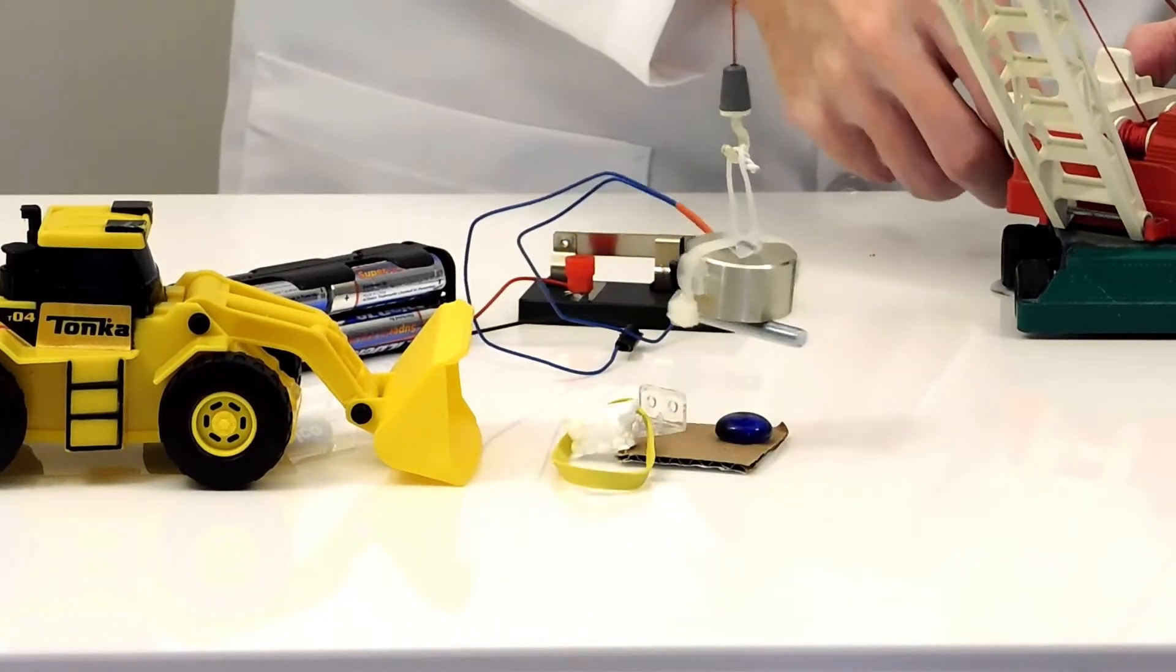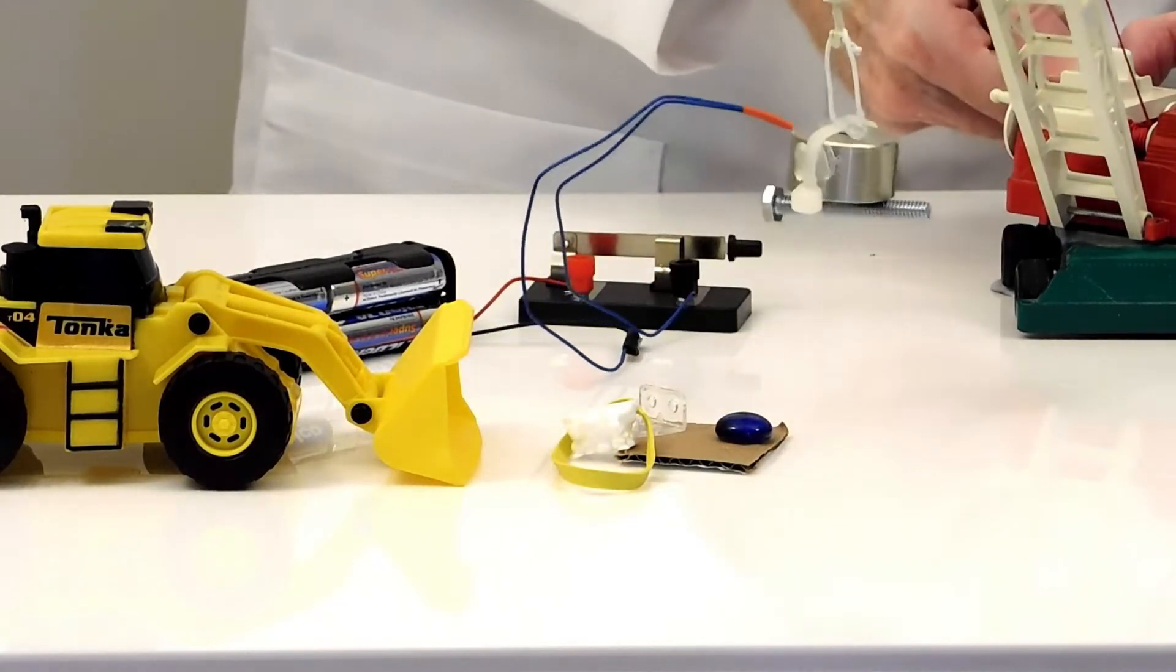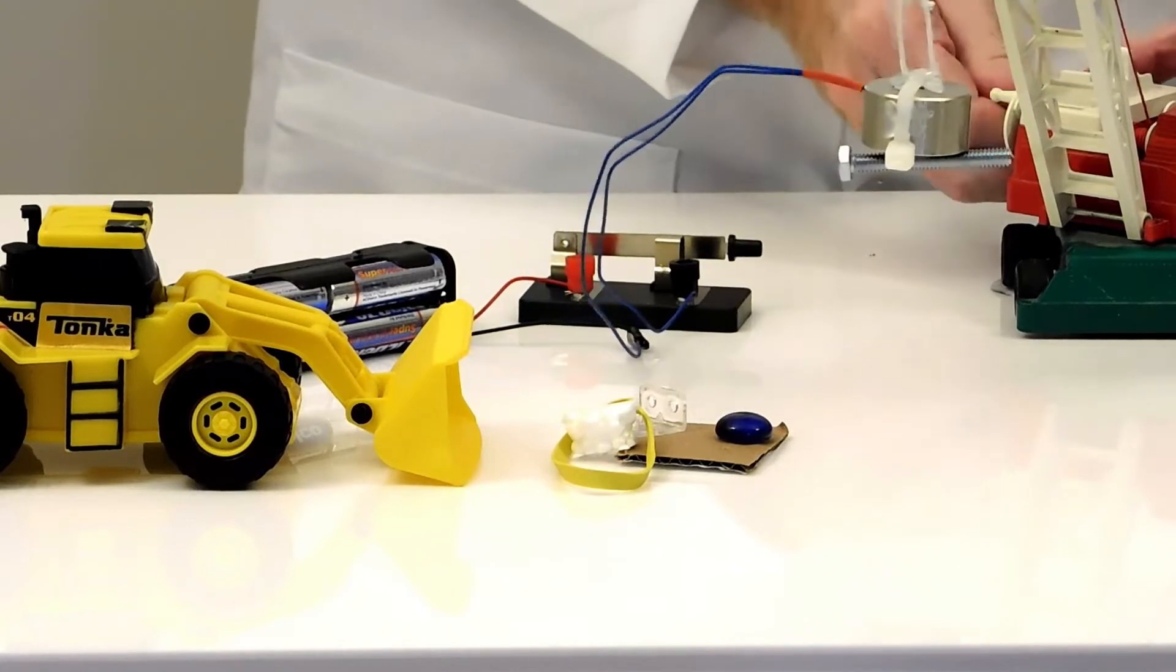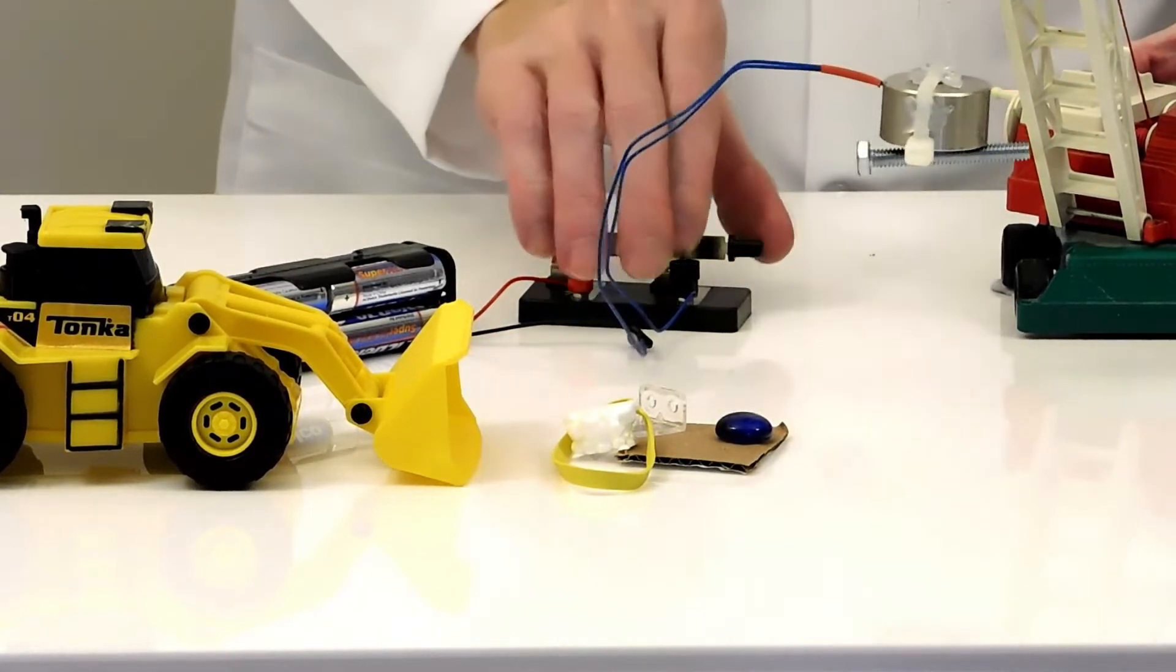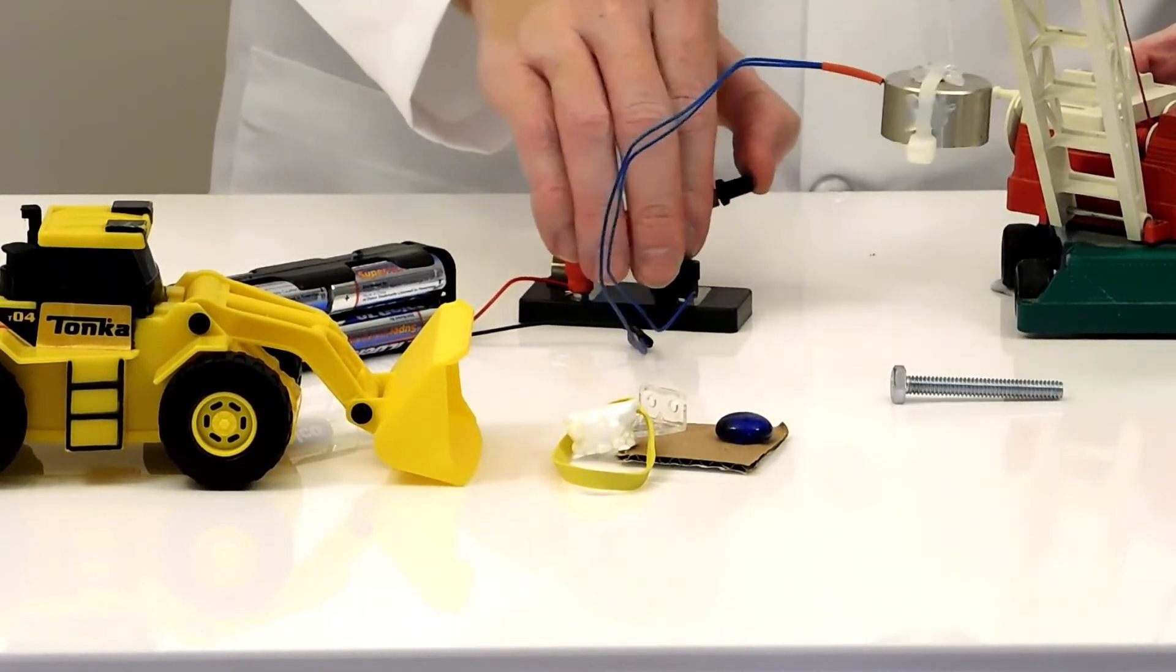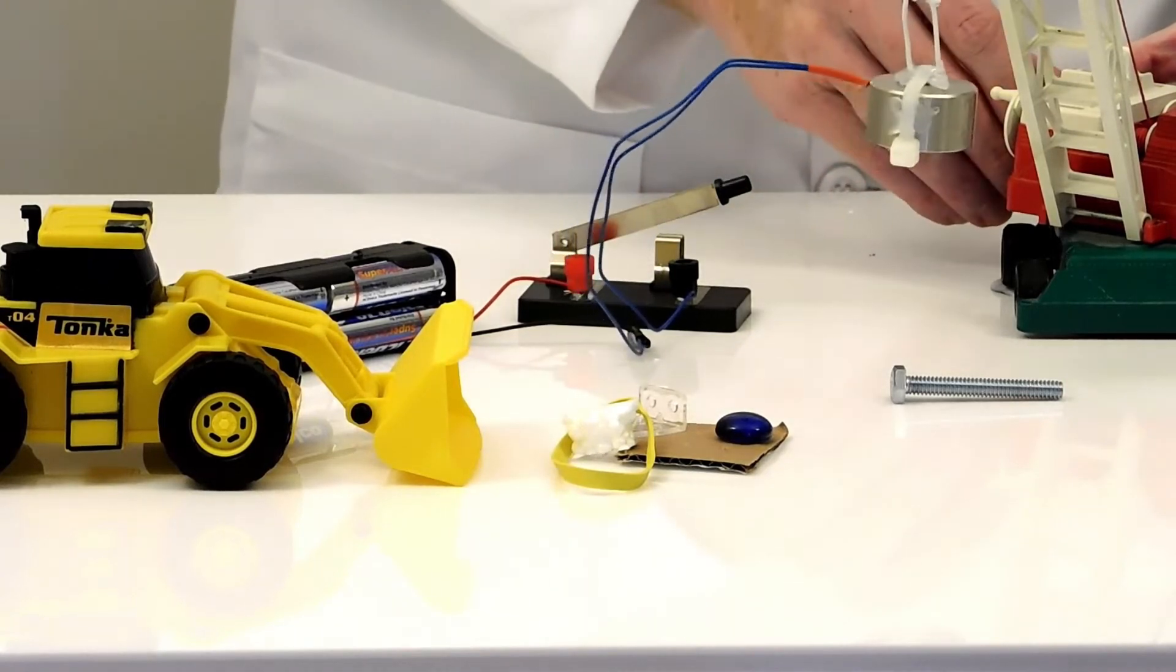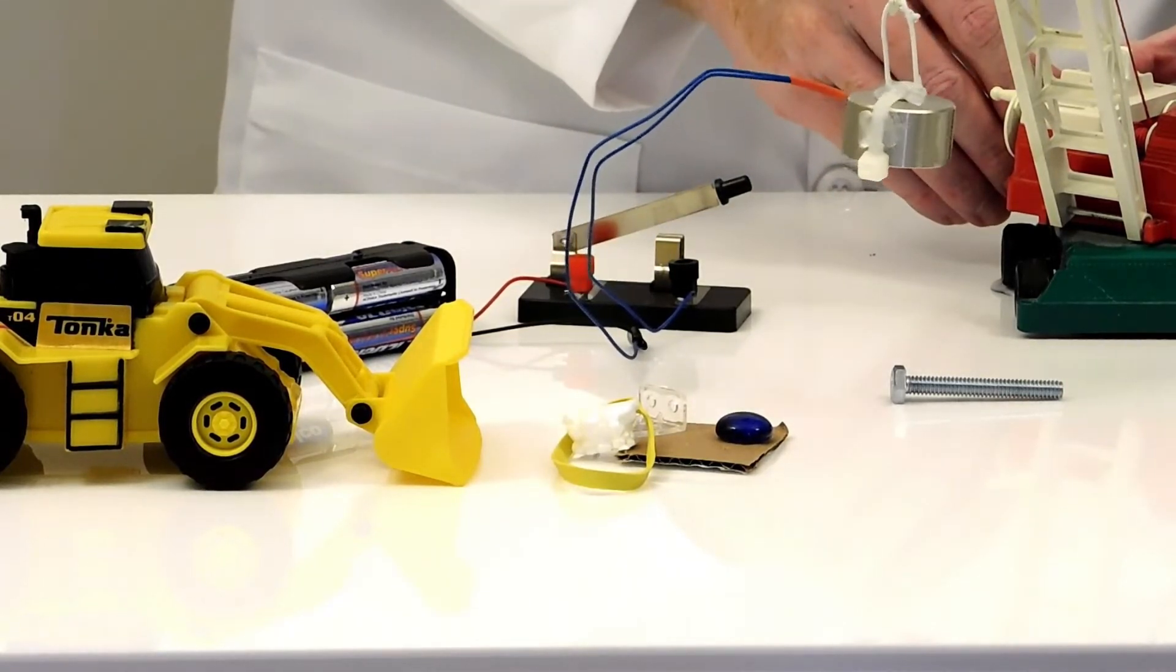The electric magnet only attracted the steel bolt. We will move the magnet to a different location, then turn the magnet off, and the bolt drops. As with the real crane, we have separated some metal from a pile of other items.